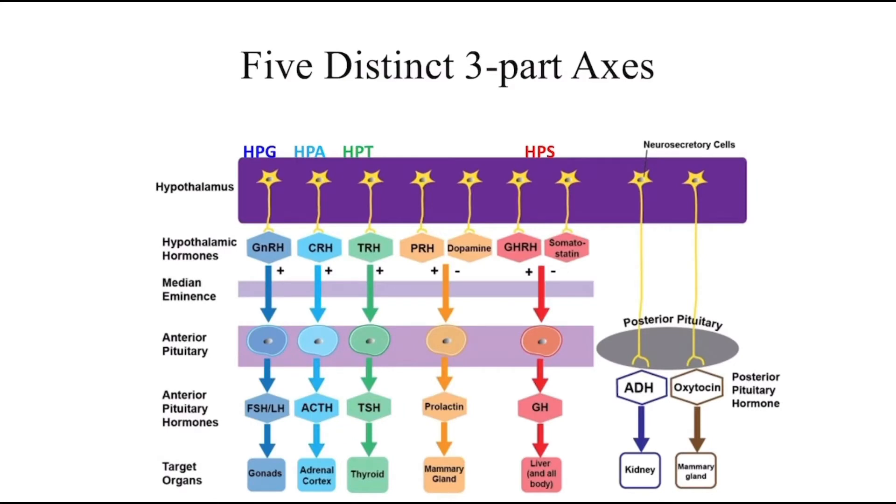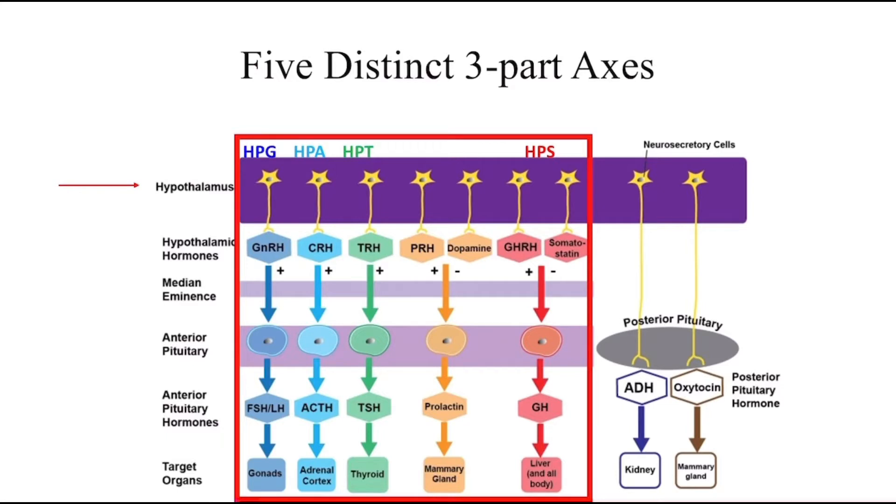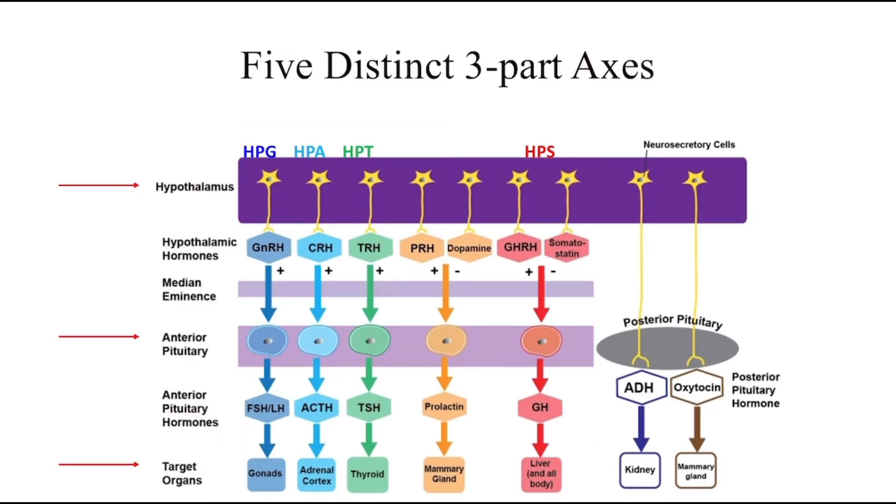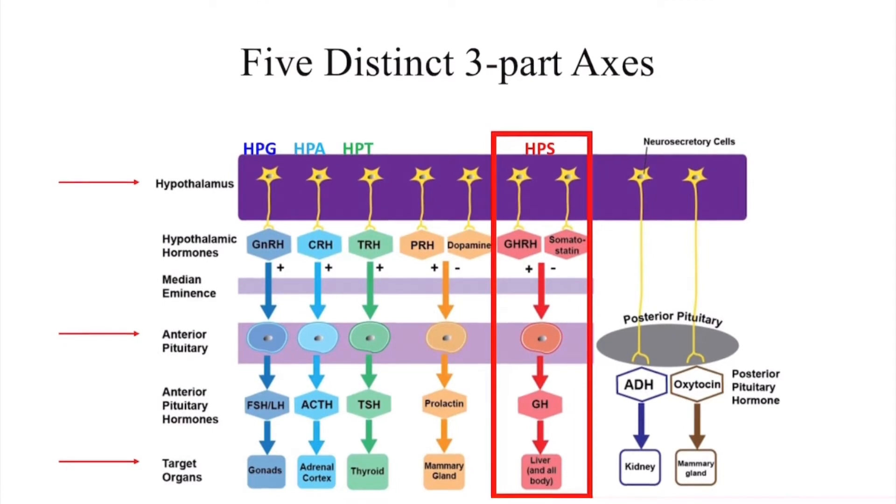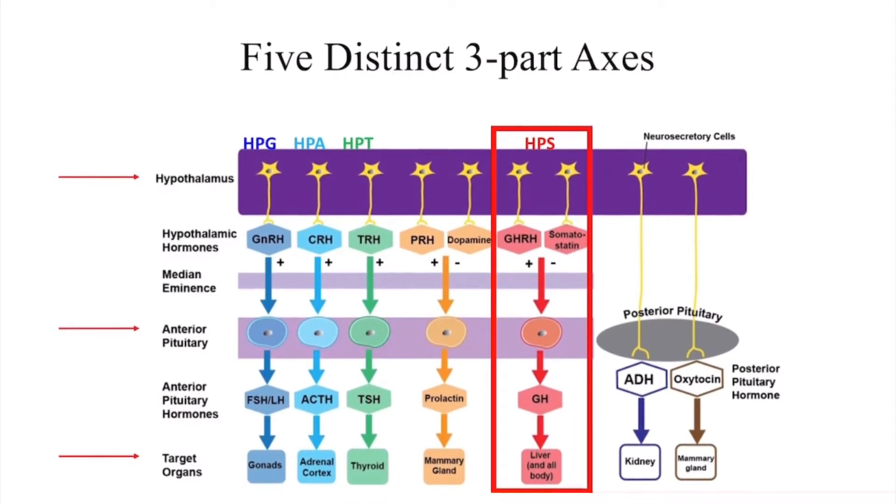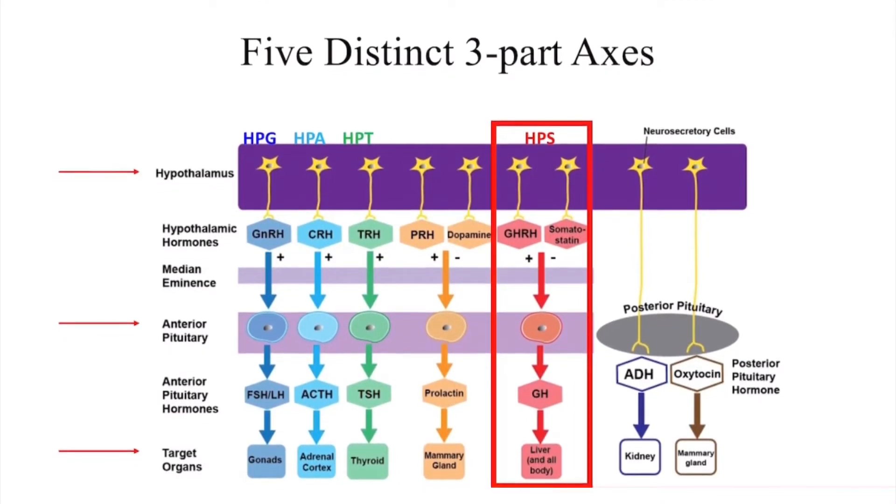There are a total of five distinct three-part axes involving the hypothalamus, anterior pituitary gland, and distant endocrine tissues. This video will cover one of these axes, the hypothalamus-pituitary somatotropic, or HPS axis, also known as the growth axis.